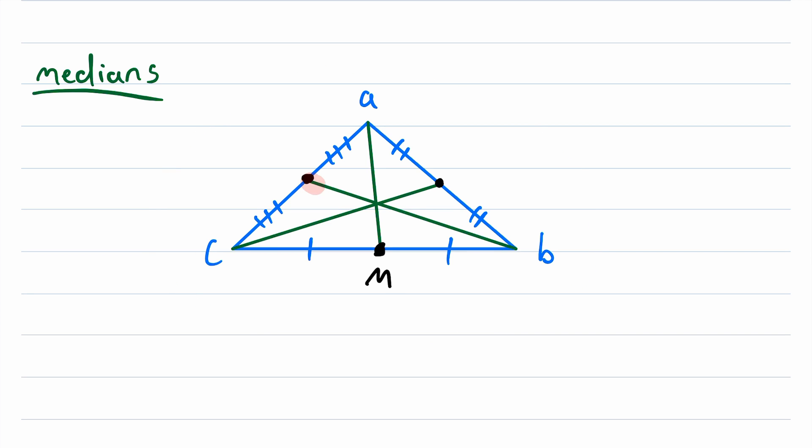The three medians of a triangle will always intersect at one point, which is pretty darn cool. This point that the medians intersect at is called the centroid of the triangle. So that's your first fun fact. I'll give you one more fun fact.